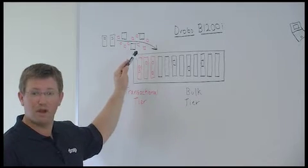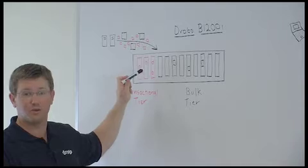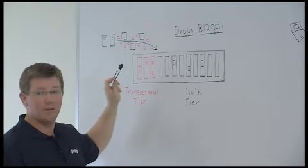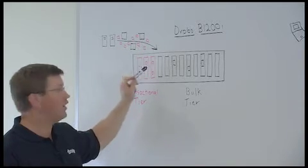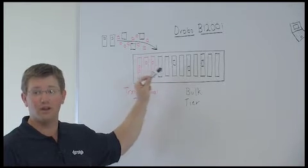The smaller random IOs are placed on the solid-state drives because that's what solid-state drives are really good for. The large bulk transfers or sequential IOs are placed on the hard disk drives because hard disk drives are really good for capacity.